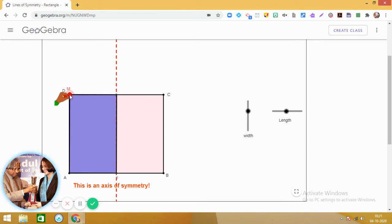Yes, this is one line of symmetry we have seen in the rectangle. This is also called the axis of symmetry and we say that this is reflection symmetry.